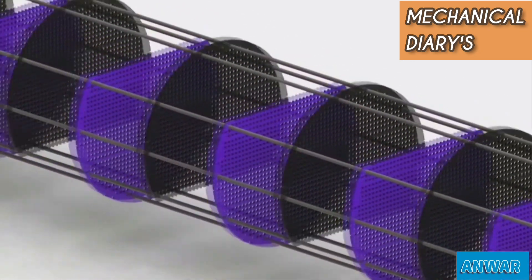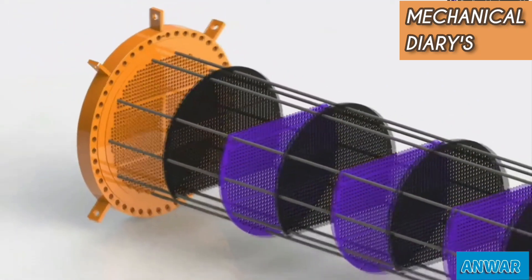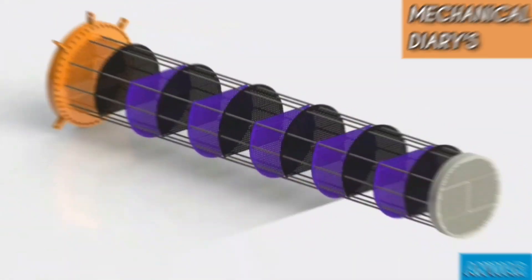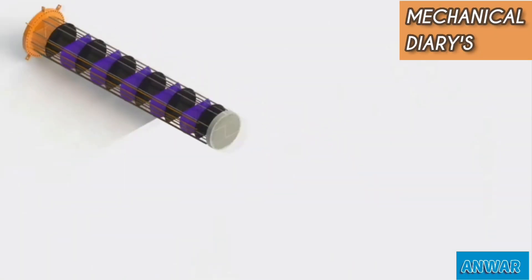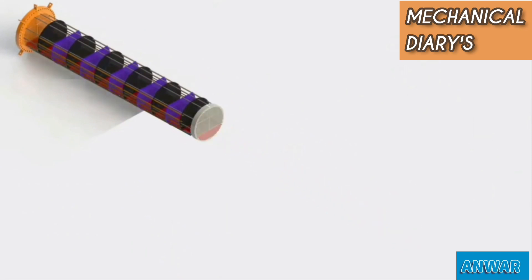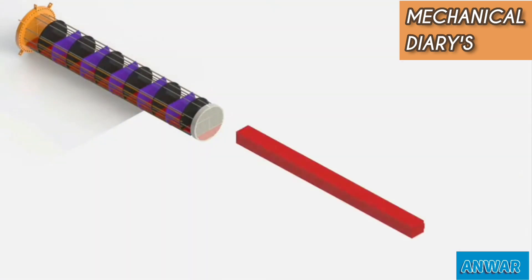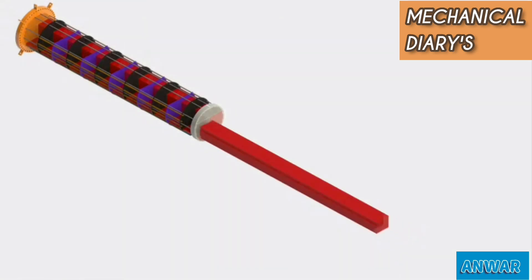The second tube sheet is the floating head tube sheet. Once we assemble both tube sheets, tie rods, and buffer plates, we can start inserting the tubes. Tube insertion also has some patterns — there are three types: triangular pattern, rotated triangular pattern, and square pattern.